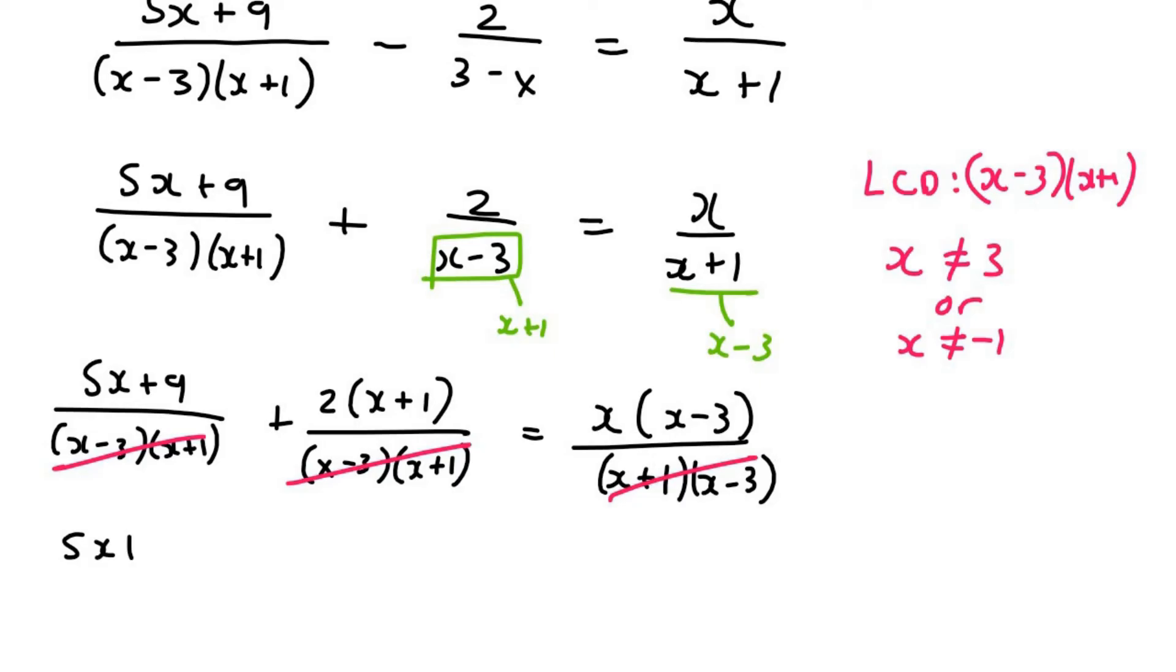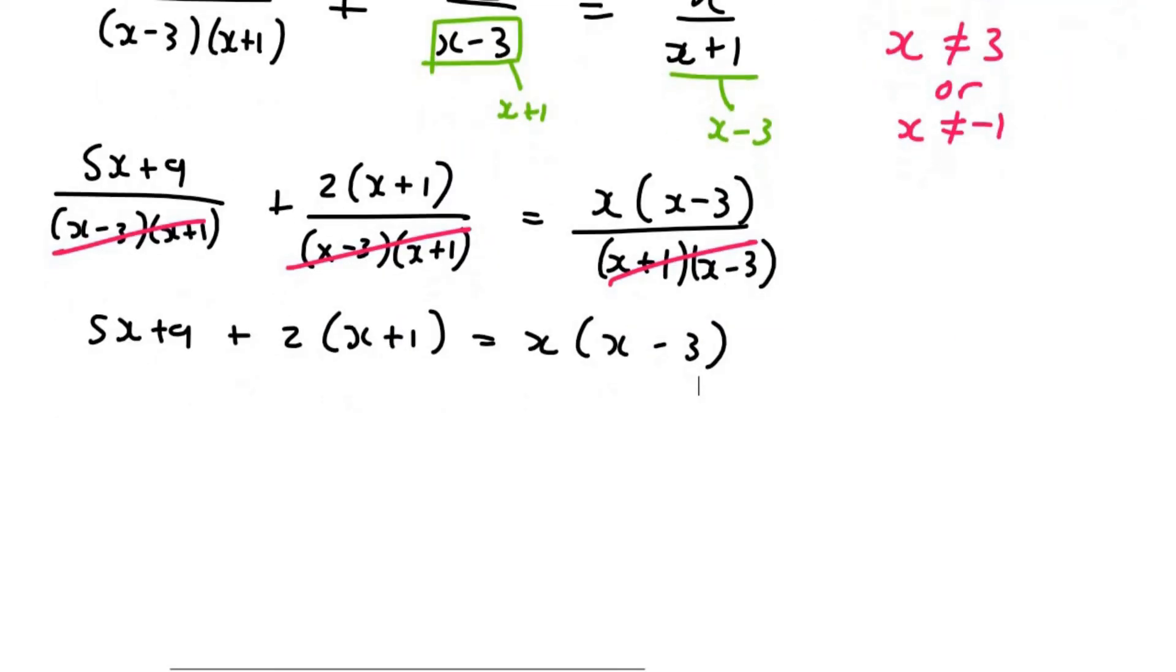And so now we can say 5x plus 9 plus 2x plus 2 equals to x squared minus 3x. I broke rule number 1. I'm actually going to go back. And to help you guys, remember, we shouldn't really do anything going into the next step. You should just write it down as it was. And now, just to be cautious, now we're going to multiply everything in. So now it's going to give us 5x plus 9 plus 2x plus 2 equals to x squared minus 3x.